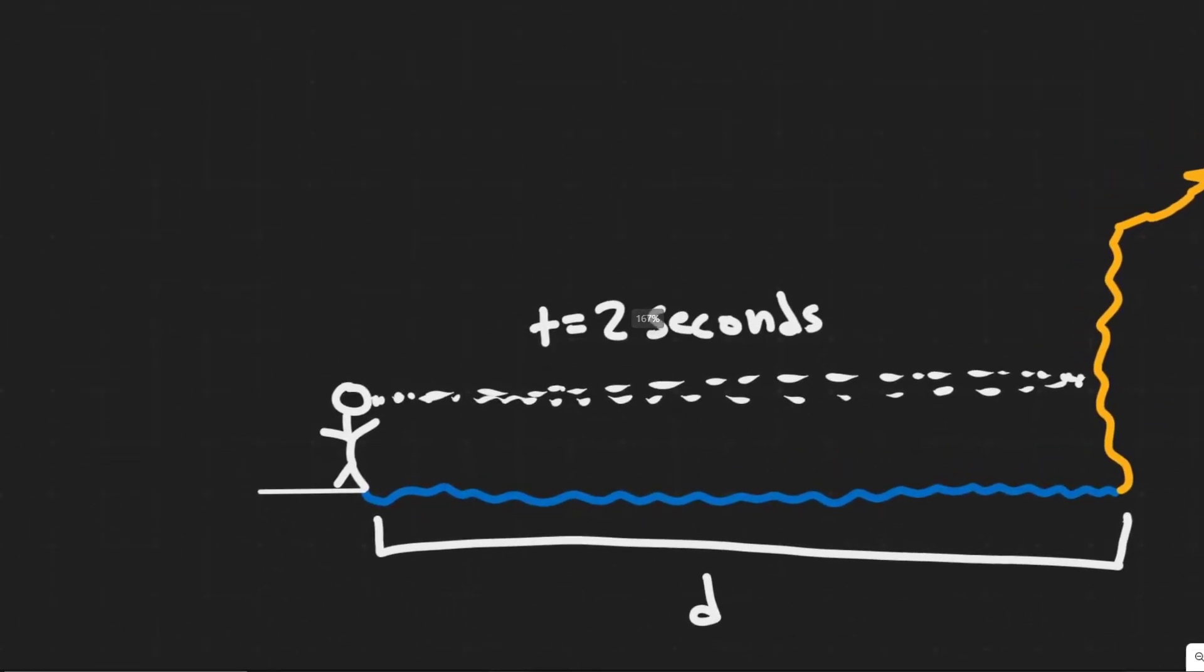And so the way we're going to solve for this is just by using the basic formula distance equals velocity times time. So if we know the speed at which the sound of her shout is going to travel and we know how long it travels for, then we know the distance it travels.